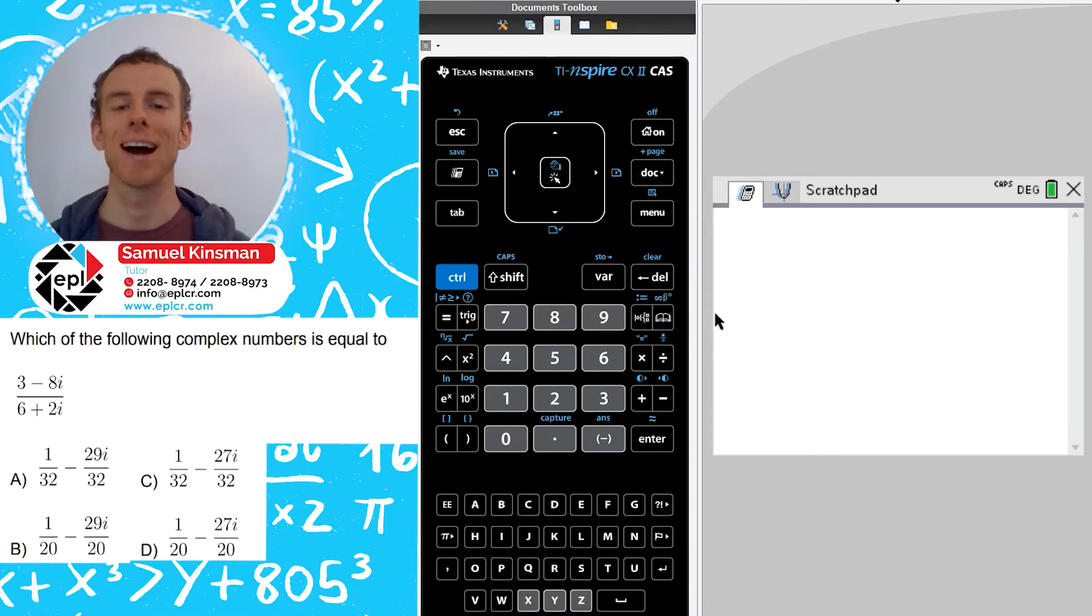All right, now we're going to learn how to solve problems that have the imaginary number i in them. On the SAT, whenever you see a fraction with an i in the denominator, what the test wants you to do is rationalize. In other words, it wants you to get rid of that i from the denominator.